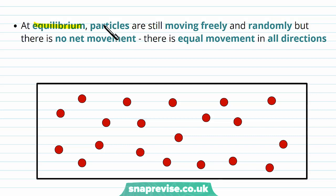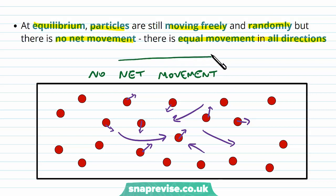So at equilibrium, the particles are all still moving freely because they haven't lost any kinetic energy, and they're moving randomly too, but there's no net movement. There's still an equal movement in all directions. So now every particle is still moving by its own accord, but they're all moving randomly, and even though some are going to be going that way, some will be going that way, some that way, and some that way, overall there's no net movement. And this is even if we have some particles going that way, there will be some going that way too. So it sort of counteracts, it balances out. So there's no net movement at equilibrium.